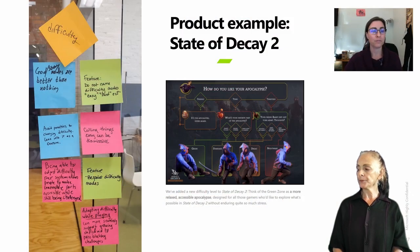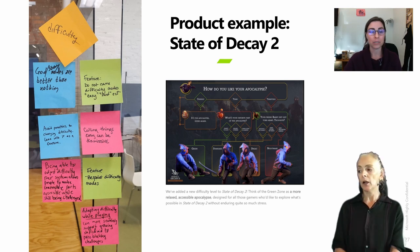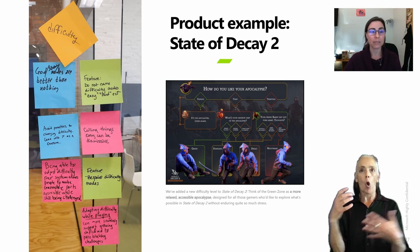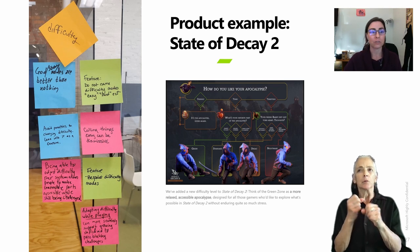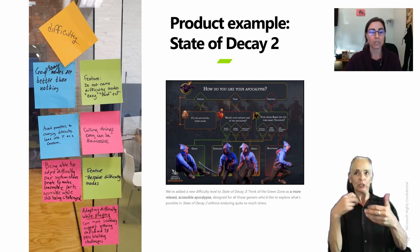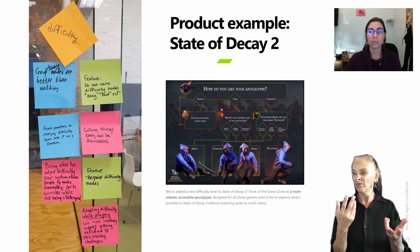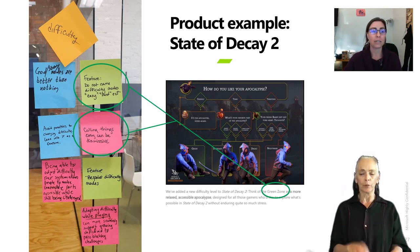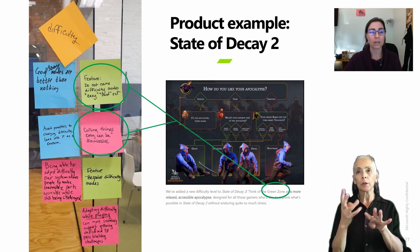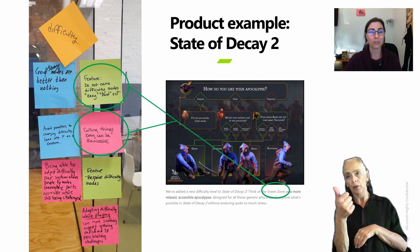Here's an example of a feature that came directly from an inclusive design workshop. State of Decay 2 is a zombie survival horror game. The team wanted to add more difficulty levels to make their game accessible to more players. They decided to make a lighter, easier difficulty mode, but had learned through the workshop that calling it 'easy' sometimes feels denigrating to players. So instead, they decided to call it the Green Zone. They also created a livestream and video that clearly explained how the difficulty level was different from the others and what changed — because they learned that from the inclusive design workshop too.